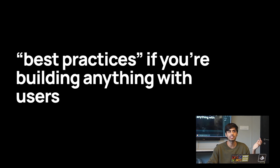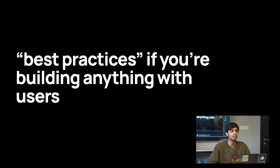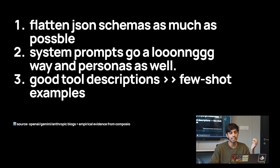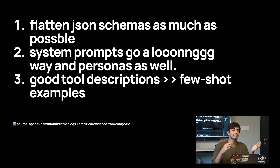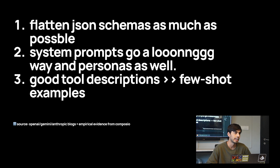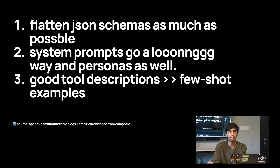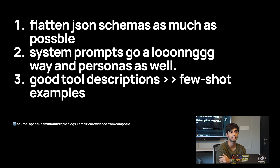Some basic best practices I've found by reading blogs, notebooks, and experimenting: first, JSON schemas are basically how LLMs call an external API or interact with the external world. But when you start using real-world APIs like the Gmail API, their JSON schemas tend to get pretty complex. A flat-out recommendation that can improve how you use these features is to flatten your JSON schemas as much as possible.